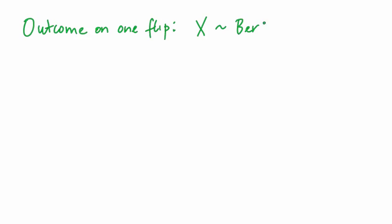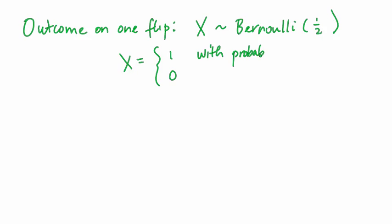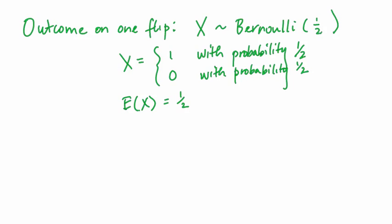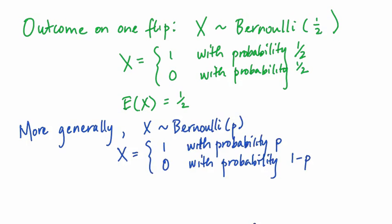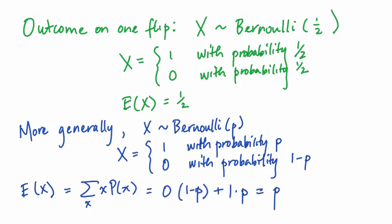We'll use these definitions and rules to calculate the expected value and variance for the sampling distribution for the estimate of the probability of heads from ten flips of a coin, p-hat. One coin flip can be modeled as a Bernoulli(1/2) random variable, which is either one or zero with probability one half. The expected value or long-term average of such a random variable is one half. If we generalize to any situation where something happens or doesn't happen — with probability p that it happens — then the expected value using the formula is the sum over x of the possible values times their probability. For a Bernoulli(p) random variable, we get zero times (1-p) plus one times p, which works out to be p.